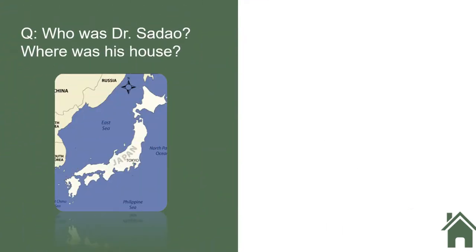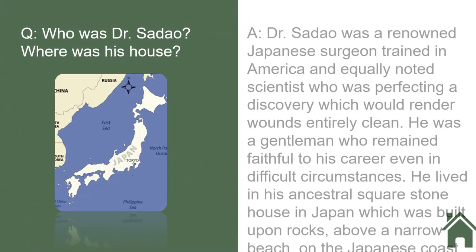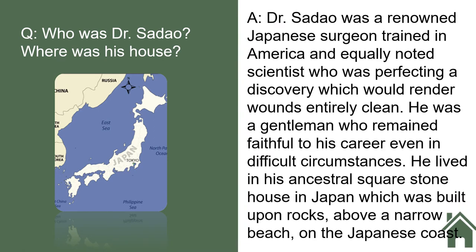Who was Dr. Sadao and where was his house? Dr. Sadao was a renowned Japanese surgeon trained in America, and an equally noted scientist who was perfecting a discovery which would render wounds entirely clean. He was a gentleman who remained faithful to his career even in difficult circumstances. He lived in his ancestral square stone house in Japan, which was built upon rocks above a narrow beach on the Japanese coast.